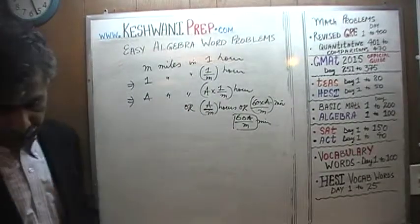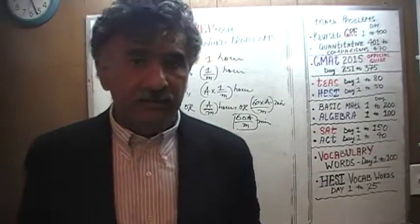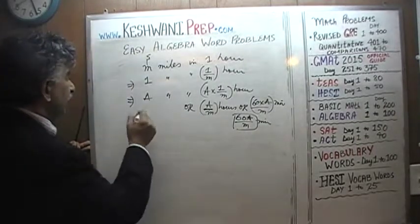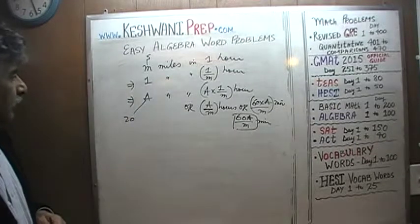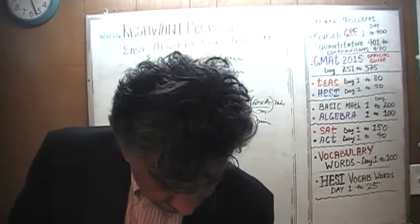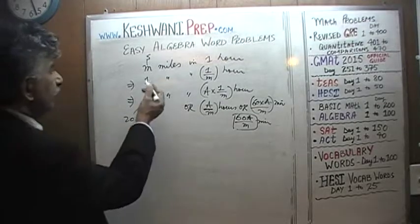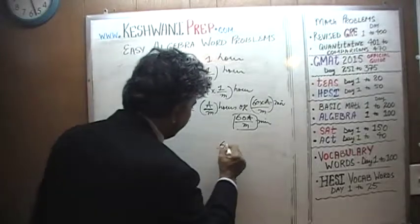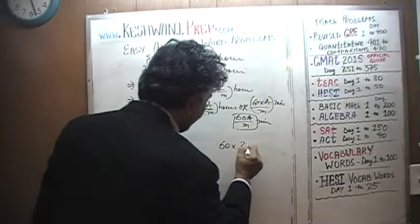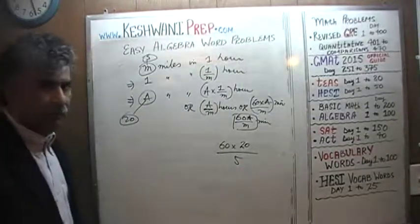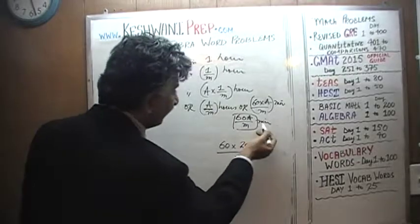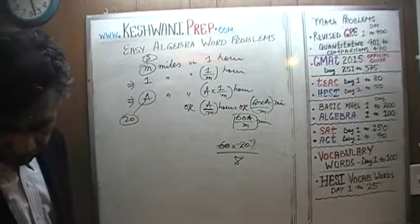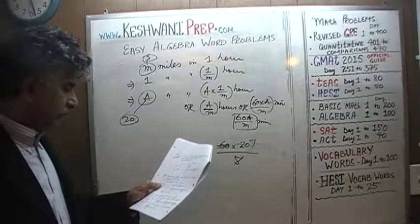To verify, plug in numbers: say we're going 5 miles per hour and want to go 20 miles — that should take 4 hours. Using our formula: 60 times A (which is 20) over M (which is 5) gives 60 times 20 over 5. This is in minutes, so divide by 60 to get hours — and you can see it's 4 hours. Very simple to verify.